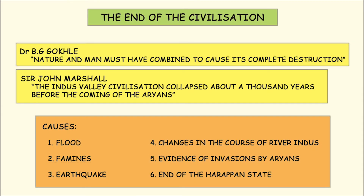The last topic of Chapter 1 is the end of the civilization. There are different views put forward by different scholars about how the Harappan civilization ended. For example, Dr. B.J. Gugli was of the opinion that it was man and nature together that destroyed the Harappan civilization.